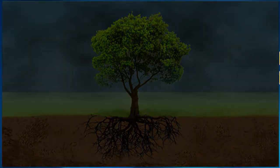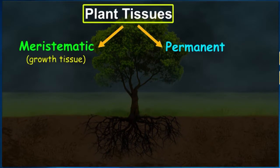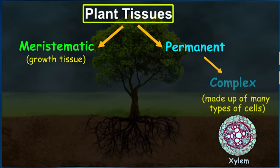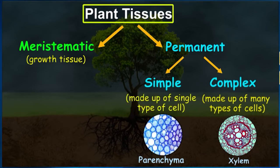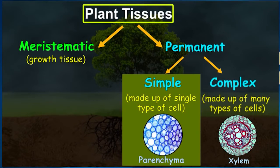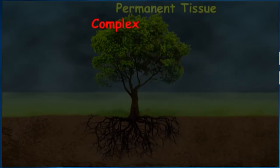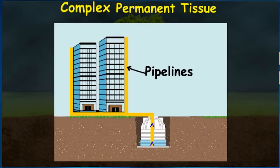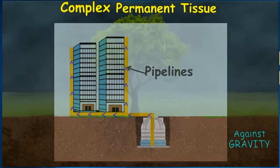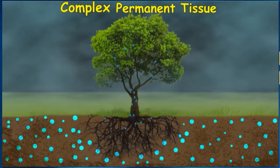To perform this important function, plants have a tissue made up of different types of cells. When a tissue is made up of different types of cells, we call it a complex tissue — in contrast to a simple tissue like parenchyma, which is made up of just one type of cell. The function of this tissue can be compared to the pipelines of a building which carry water stored in a tank below up to many apartments against gravity. The tissue with a similar function in plants is called xylem.